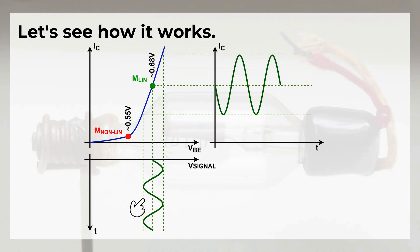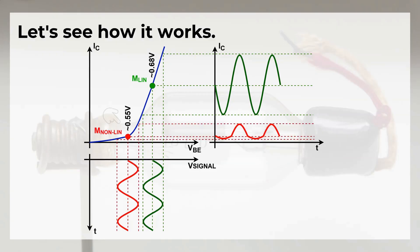If we apply an AC signal to the transistor in this linear region of the characteristic, the output will be slightly larger, but it will have the same shape as the input signal.